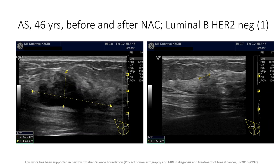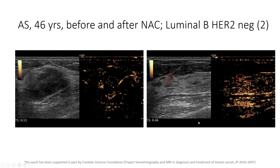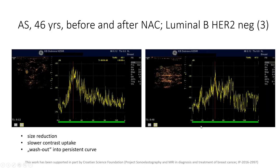Here are examples from our study. A 46-year-old female patient before and after neoadjuvant chemotherapy: B-mode ultrasound shows significant reduction in lesion size, while contrast-enhanced ultrasound shows a delay in enhancement after neoadjuvant chemotherapy. Analysis of the time-intensity curve reveals a change in curve type. We observe size reduction, slower contrast uptake, and a change from washout to persistent type — indicating a good response to neoadjuvant chemotherapy.